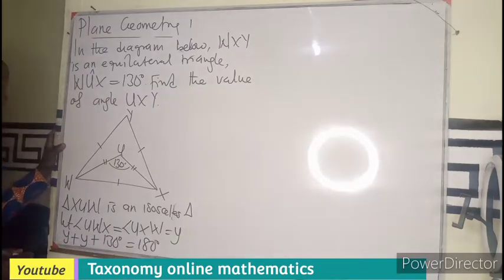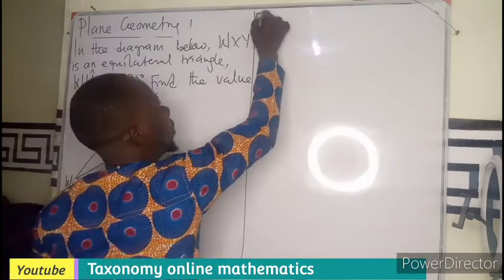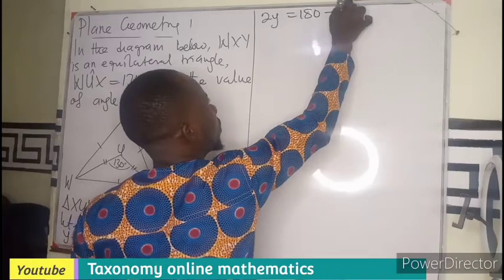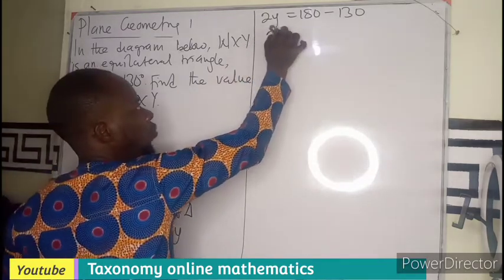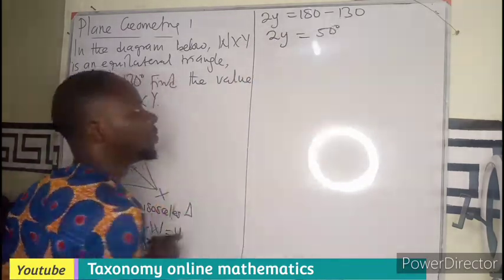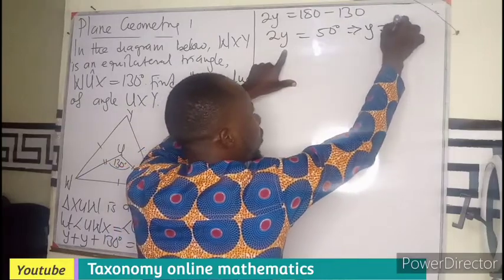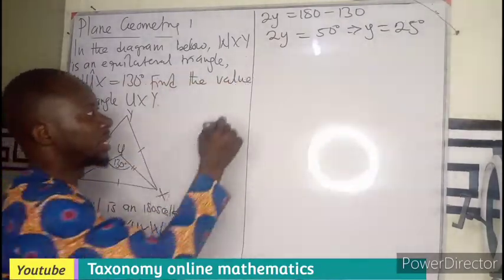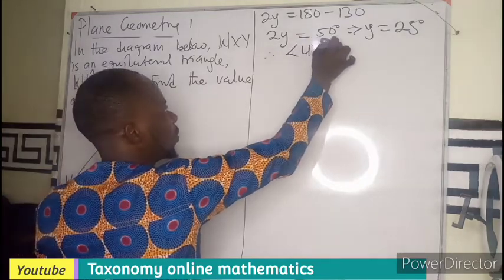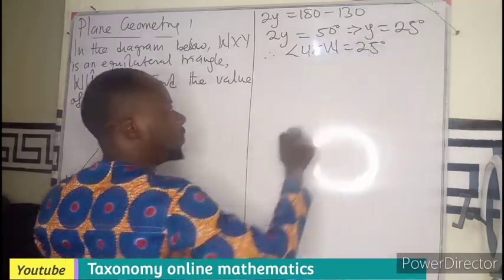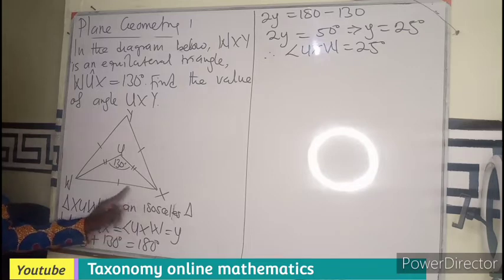Since the sum of angles in a triangle equals 180 degrees, we have y plus y plus 130 equals 180. That gives us 2y equals 50 degrees, so y equals 25 degrees.